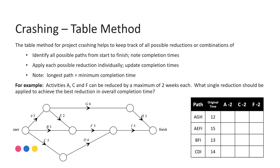The table method for project crashing helps you keep track of what reductions can be made and the impacts they have. We set up a table which contains all of the possible pathways from the start to the finish. I've listed each pathway and the durations — you can see the first one AGH there — mapping each of the possible pathways. In this case there are four possible different pathways from start to finish, each with what I call their original completion time — the completion time without any reductions.